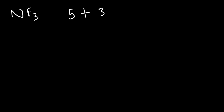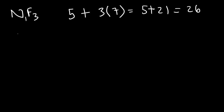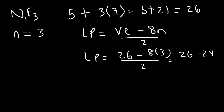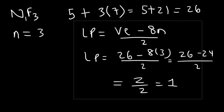Now let's look at another example: nitrogen trifluoride. Let's draw the Lewis structure and calculate the number of lone pairs using the formula. Nitrogen has five valence electrons, and fluorine has seven. Three times seven is 21, and five plus 21 is 26. There's a total of four atoms, one of which is the center atom, so there are three atoms attached to it and n is 3. The number of lone pairs is 26 minus 8 times 3 divided by 2. Eight times 3 is 24, 26 minus 24 is 2, and 2 divided by 2 is 1. So the number of lone pairs on the center atom is 1.